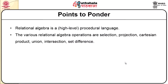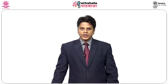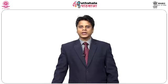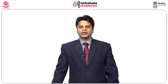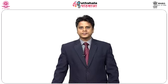To summarize the key points of relational algebra: it is a high-level procedural language. The relational algebra operations covered are selection, projection, Cartesian product, union, intersection, and set difference. Further, we introduced join operations including theta join, equi join, natural join, left outer join, right outer join, and semi-join, as well as the division operator. Thank you.